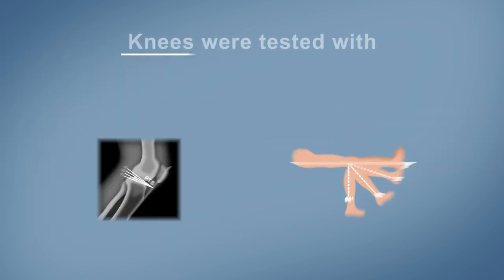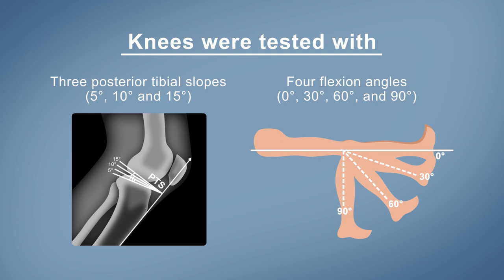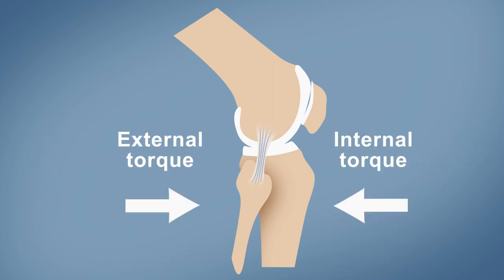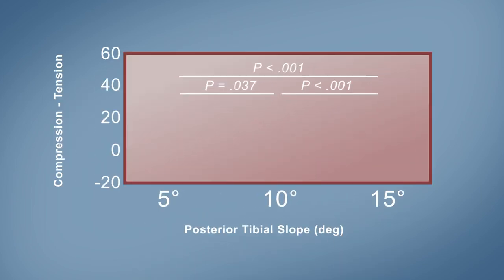These knees were tested with different posterior tibial slopes and oriented at different flexion angles. The forces imparted on these knees included a compression load, internal torque, and external torque. Forces were measured using a novel multiaxial force sensor.